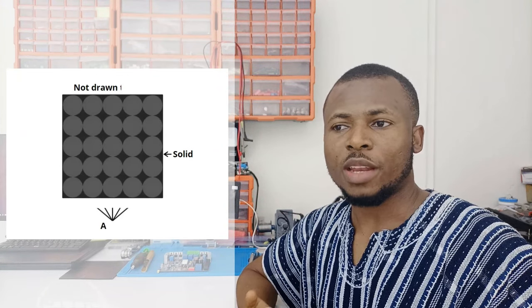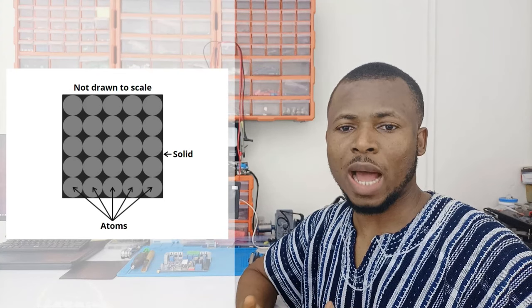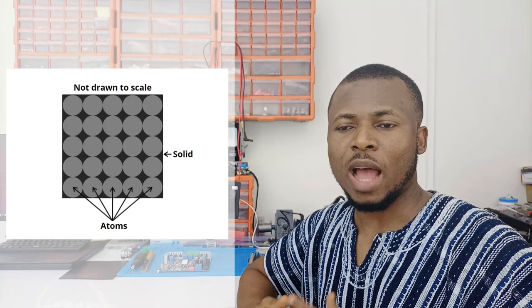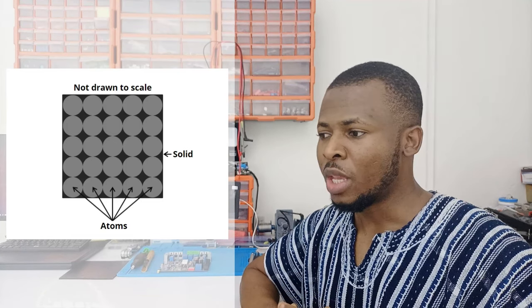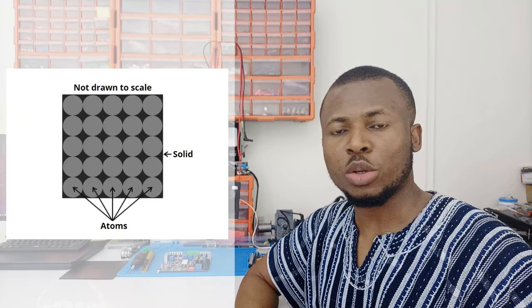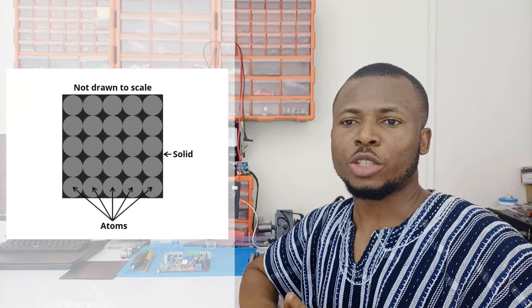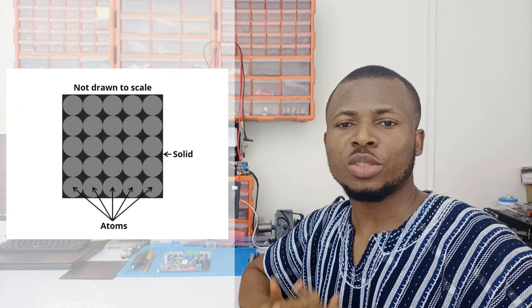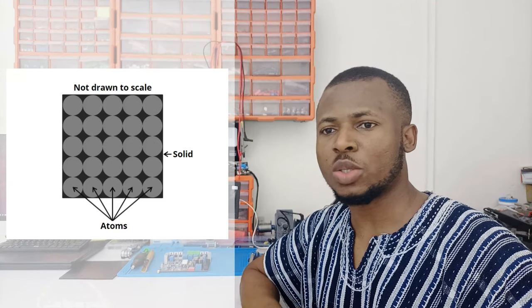In the previous lecture, we learnt that matter manifests in different states. However, on Earth, three of these states are dominant. They are solid, liquids and gases. We also learnt that all these states have something in common — they are made up of tiny particles called atoms, and these atoms are the basic unit of matter, meaning they form the building blocks of matter. Now, in electronics, we are mostly concerned about solids, so let's focus on the solid state for now.